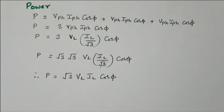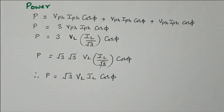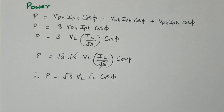In this video, we discussed the balanced delta connection and the relation between phase and line voltage as well as current. We observed that line voltage equals phase voltage, but line current equals √3 times phase current. Finally, we discussed the power formula P = √3 × VL × IL × cosφ. Subscribe the channel for more videos and notifications. Thank you for listening.